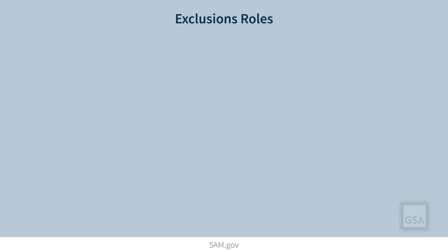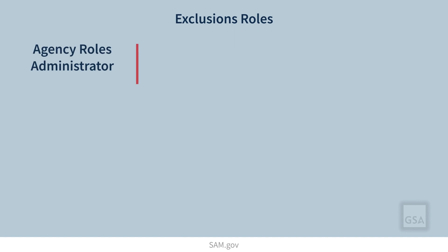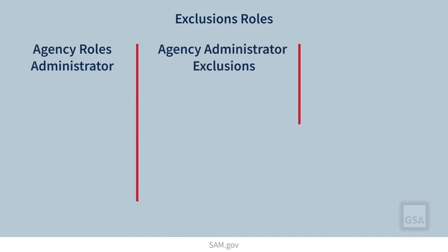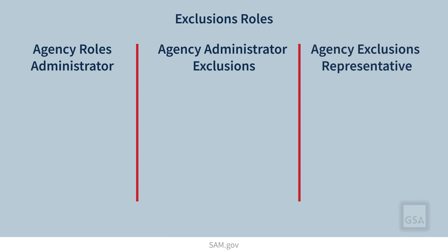There are three roles in the exclusions domain of SAM.gov: agency roles administrator, agency administrator exclusions, and agency exclusions representative.